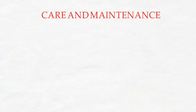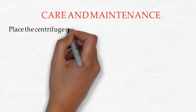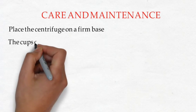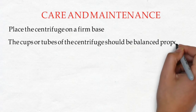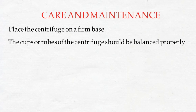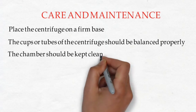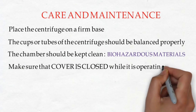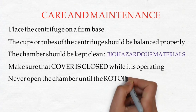For care and maintenance: place the centrifuge on a firm base, but not near sensitive equipment such as a photometer or spectrophotometer, as it generates electrical noise and high current drain on startup. Cups or tubes should be balanced properly — load must be balanced by equal mass and center of gravity across the rotation. Do not run the centrifuge with buckets or tubes missing. Keep the chamber clean; clean all spills immediately as they may contain biohazardous materials. Ensure the cover is closed while operating, and never open the chamber until the rotor has come to a complete stop.